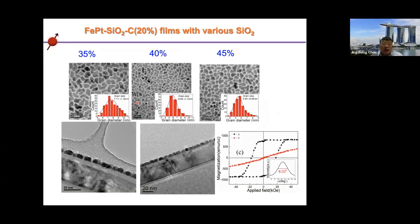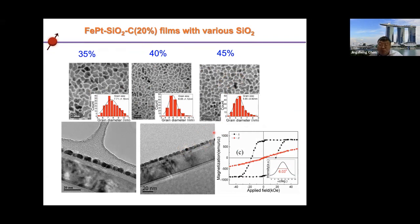We can further tune the microstructure by doping more silicon dioxide to get well-isolated grain structures. Definitely, for our optimization, the industry can achieve even better optimization — they can systematically tune parameters, changing one source per disk to optimize conditions, resulting in very good outcomes.